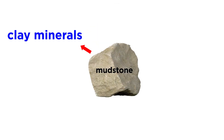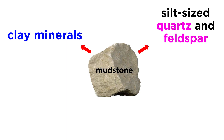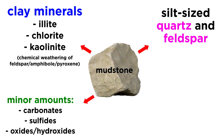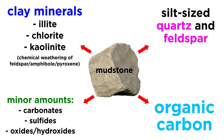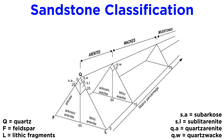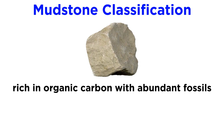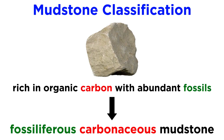Compositionally, mudstones are primarily composed of clay minerals, with moderate amounts of silt-sized quartz and feldspar. There are several types of clay minerals, including illite, chlorite, and kaolinite. They are a product of the chemical weathering of primary silicate minerals such as feldspar, amphibole, and pyroxene. Mudstones can be quite complex mineralogically, containing minor amounts of several other minerals, especially the carbonate, sulfide, and oxide/hydroxide groups. They can also be quite rich in organic carbon, making up an enormous fraction of global source rocks for oil and gas extraction. The classification of mudstones involves stringing together descriptive terms. For example, a mudstone that is rich in organic carbon with abundant fossils would be classified as a fossiliferous carbonaceous mudstone.